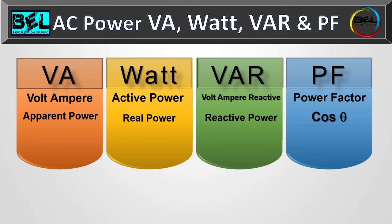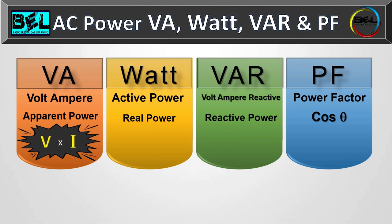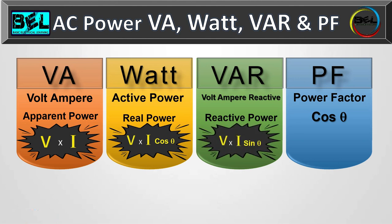To summarize: volt ampere (apparent power) = V × I, no angle involved. Real power (active/true power) = V·I·cos theta, unit is watts. Reactive power (VAR, wattless power) = V·I·sin theta. That was all about KVA, KW, KVAR, and power factor in AC circuits. I hope it was a useful video — thank you.